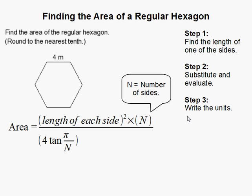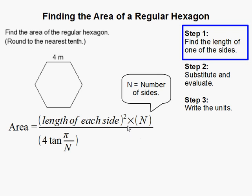How to find the area of a regular hexagon. The first thing we need to do is find the length of each of the sides. In this problem, remember it's regular, so that means once you find the length of one of the sides, you know the length of all the sides, because regular means all sides are equal and all angles are equal.